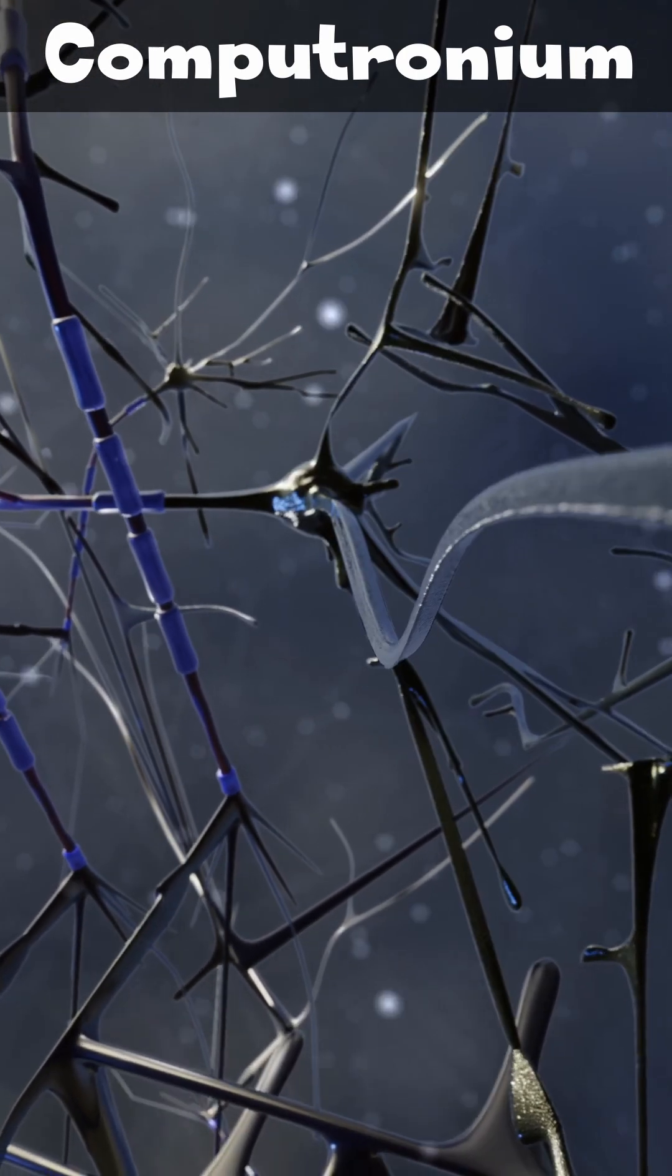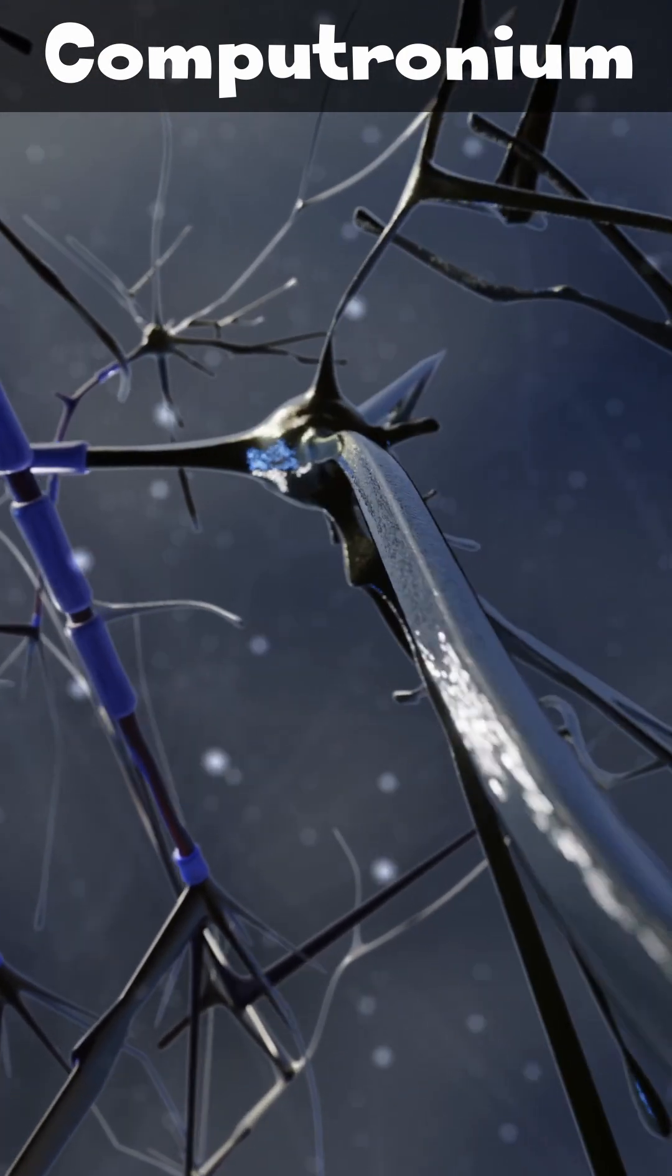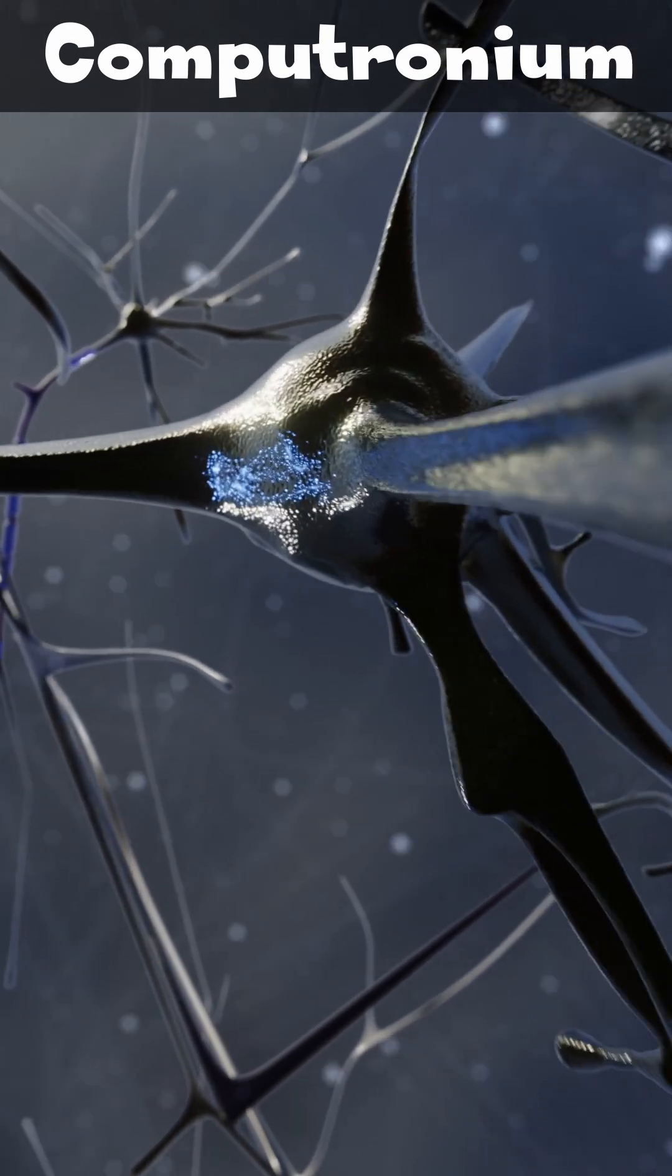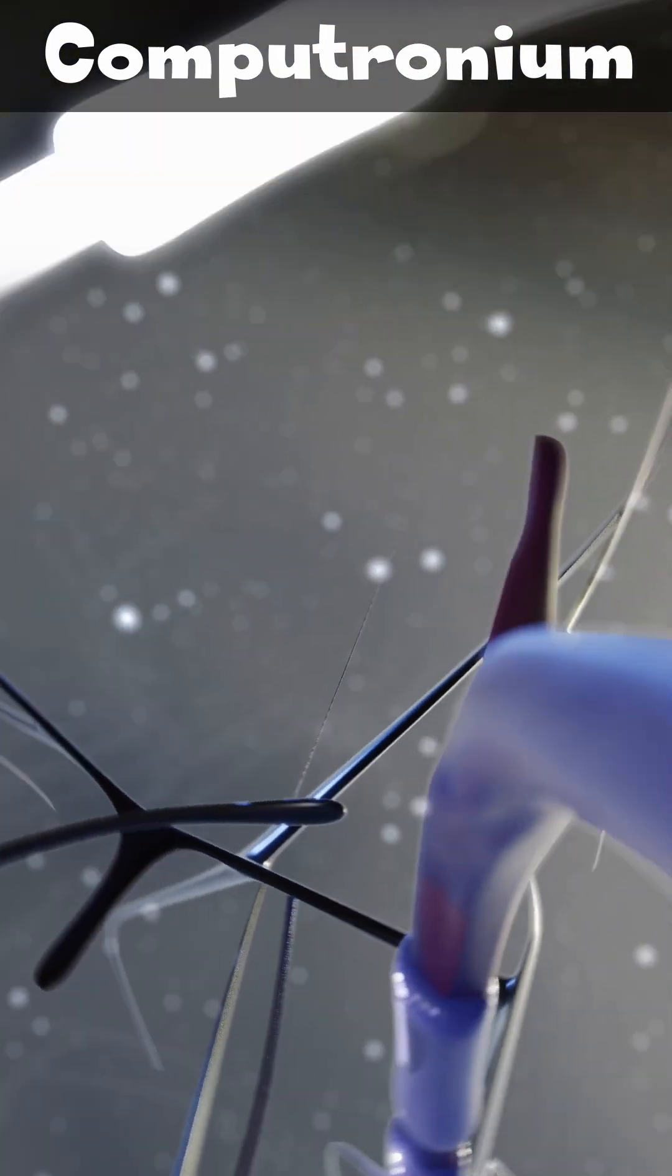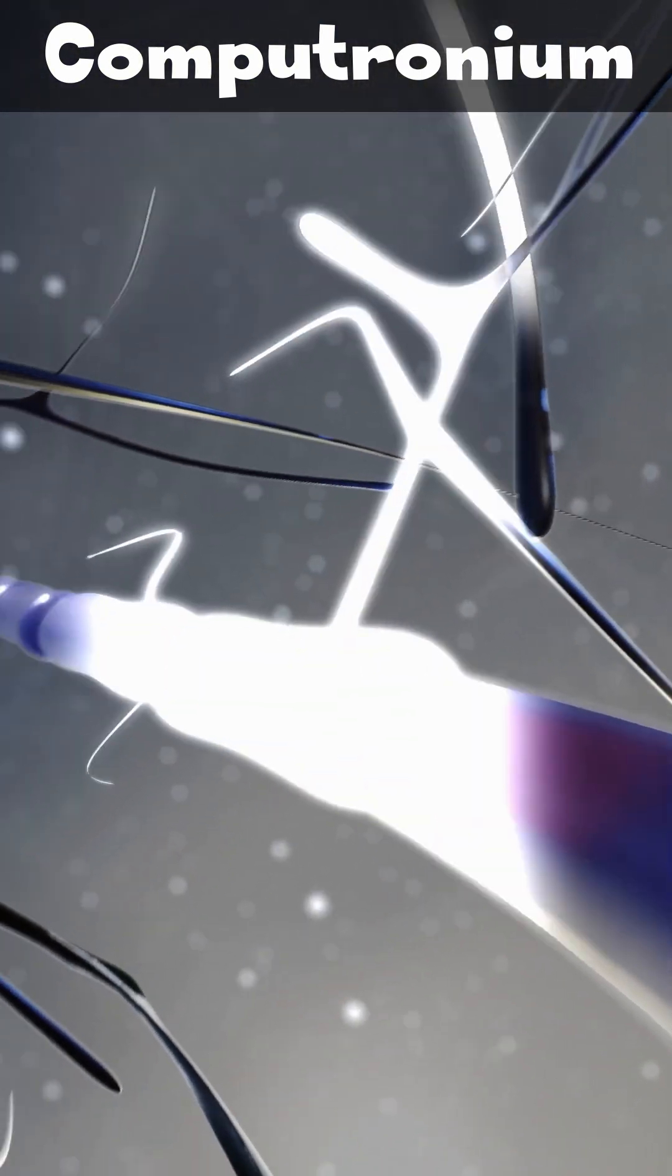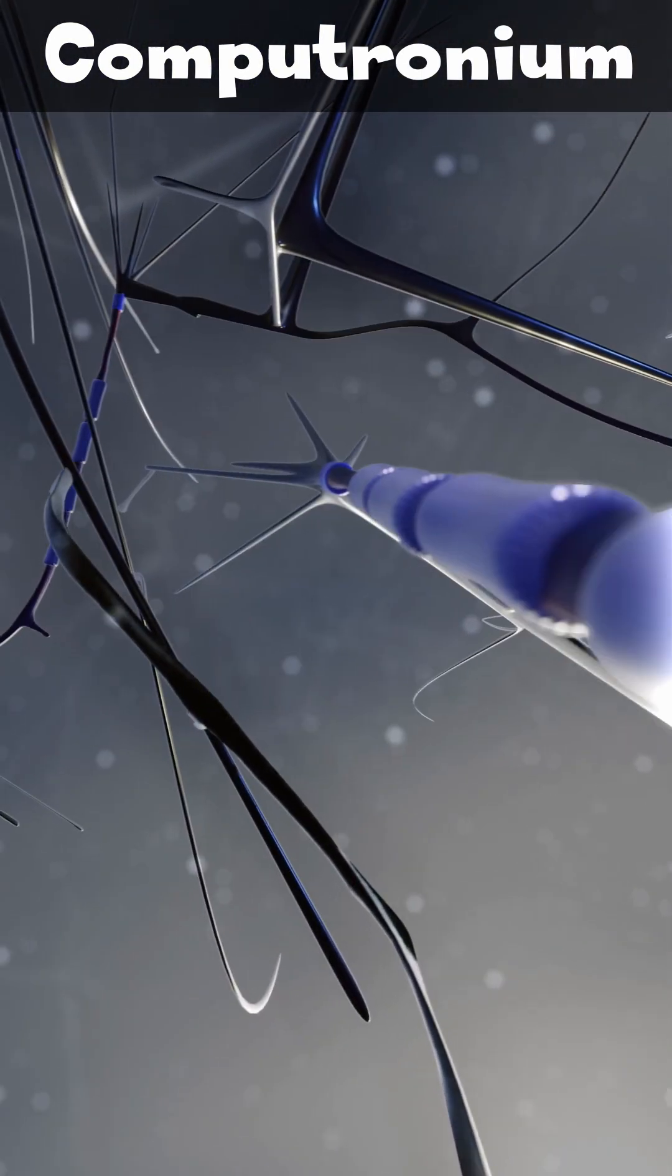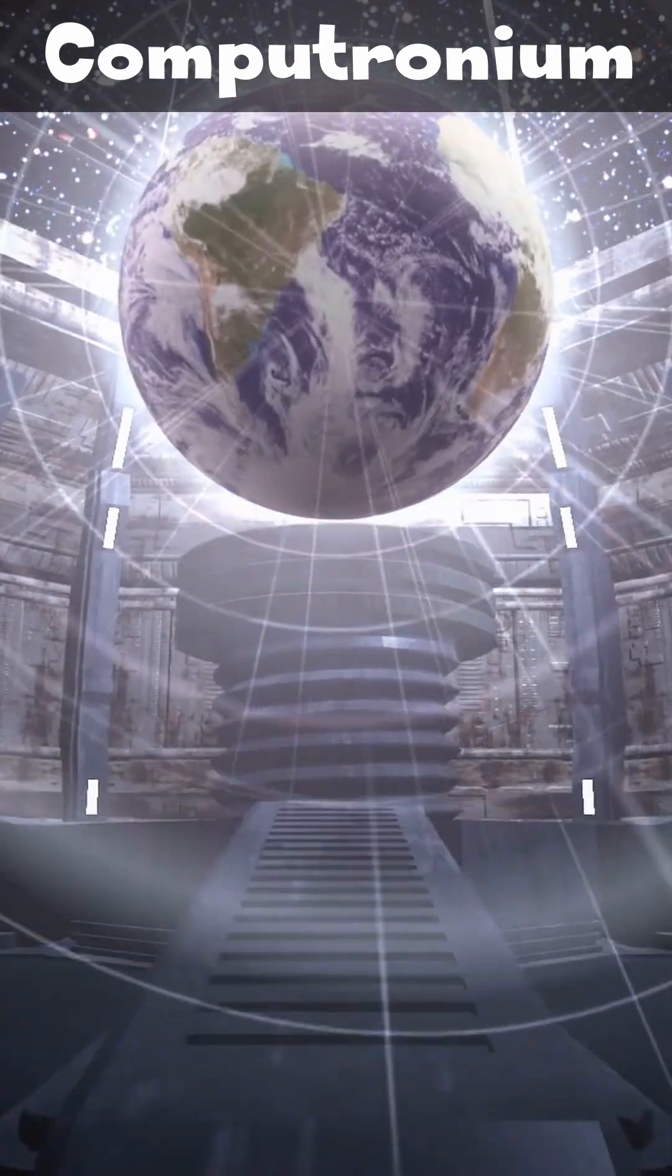Computronium is a catch-all term from speculative science and sci-fi for any type of matter which supports computation or thought. While human brains classify as computronium, the intent is usually to describe substances designed to maximize computation, and usually very large objects dedicated to this goal.